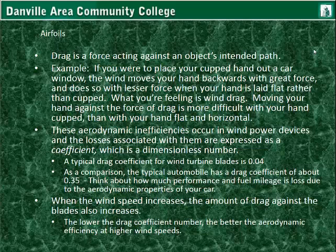Losses associated with aerodynamic inefficiencies are expressed as a coefficient, which is a dimensionless number. In equations, it acts as a correction factor — it includes the inefficiencies of the blade, its drag, and so on. A typical drag coefficient for a wind turbine blade is only 0.04. By comparison, a typical modern automobile has a drag coefficient of about 0.35, so you can see the wind turbine blade has much lower drag. You can think about how much performance and fuel mileage is lost in a car due to those aerodynamic properties.